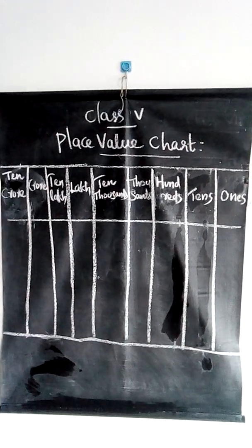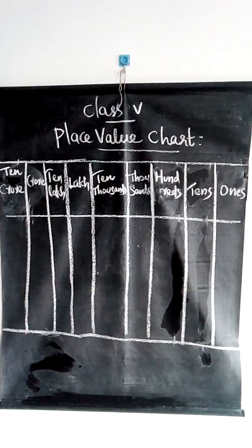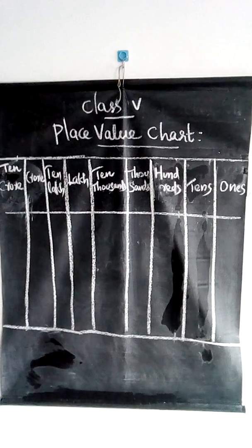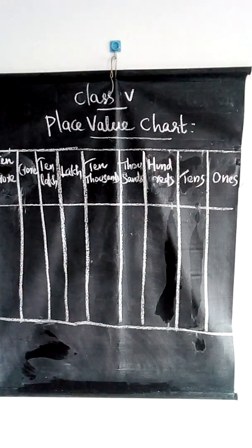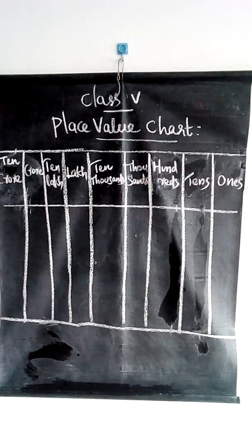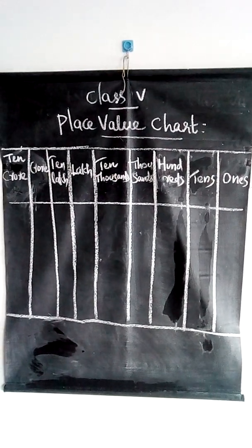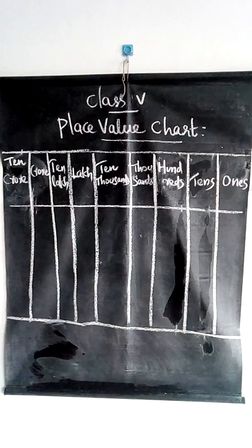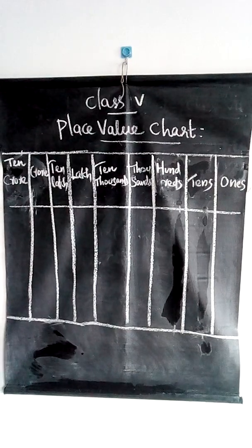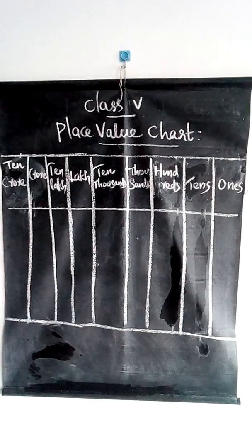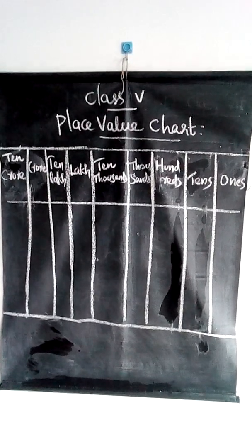The first chapter is about large numbers. We can write some large numbers in the place value chart.